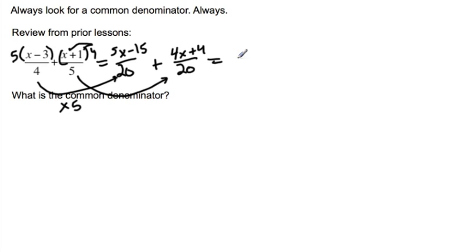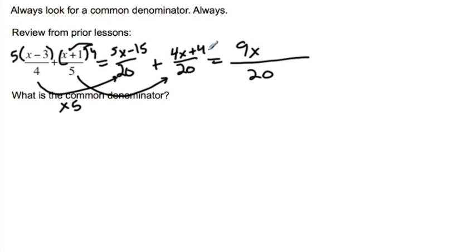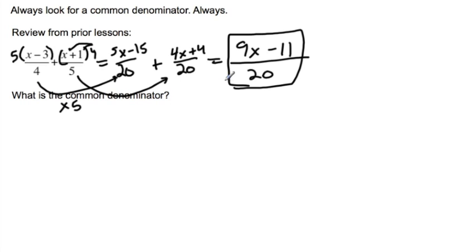Now I combine everything over twentieths. I have five-x plus four-x, which is nine-x, and negative fifteen plus four, which is negative eleven. So my answer is nine-x minus eleven over twenty.